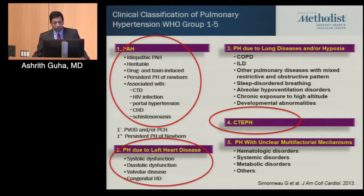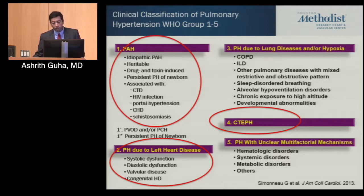However, the most common cause of pulmonary hypertension — over 60 percent of cases — is actually due to left heart disease. These patients do not have PAH; they have wedge pressure greater than 15 along with mean pulmonary arterial pressure over 25.